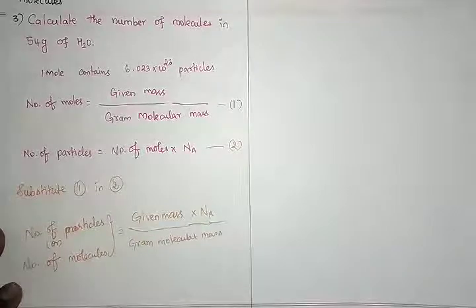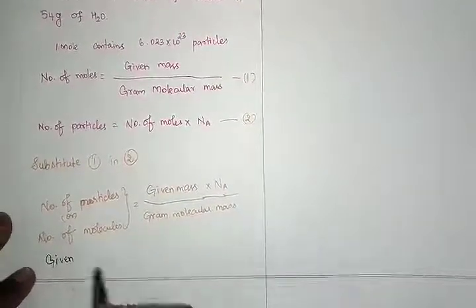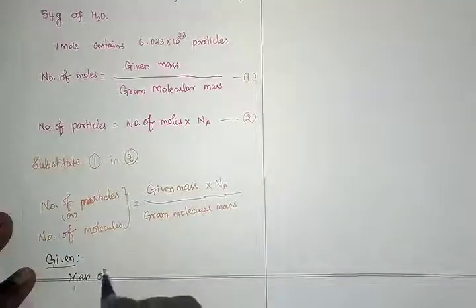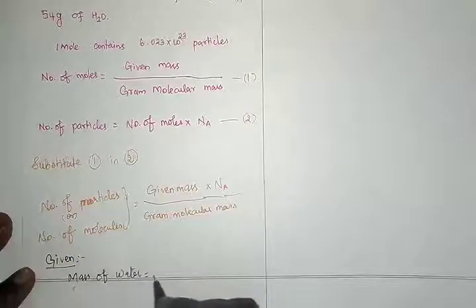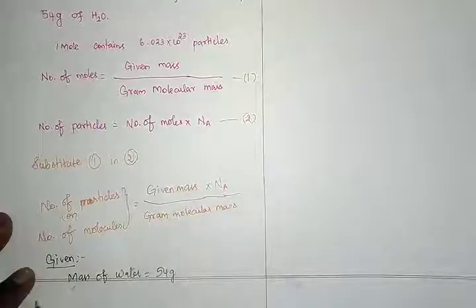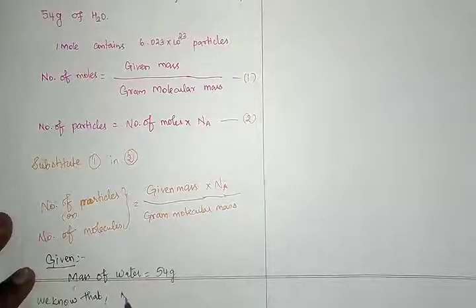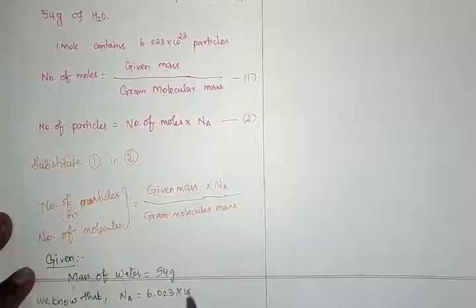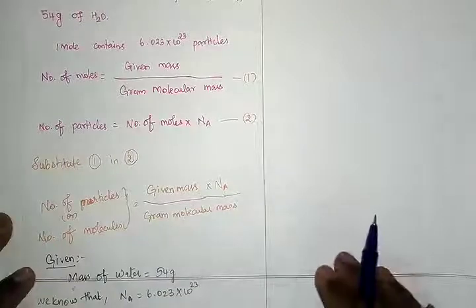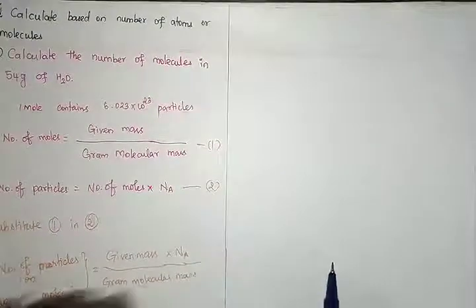Let us look at the given data. The mass of water given is 54 grams. Avogadro's number (Nₐ) is 6.023 × 10²³. We also need to calculate the gram molecular mass of water, which we will do now.